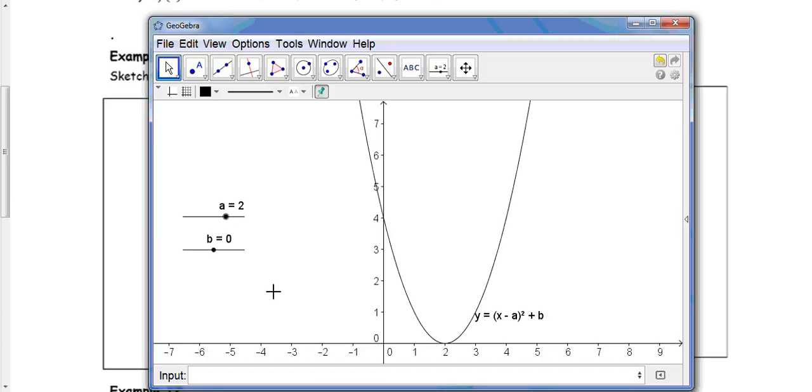And now I'm going to increase b to 3. Again, just predict what you think we're going to see. So as b increases, the whole graph moves up.